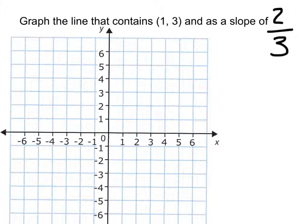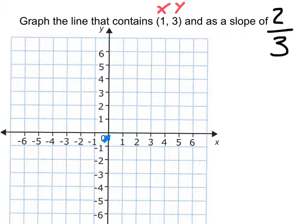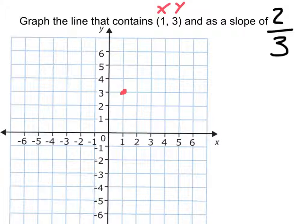I can see that it says graph the line that contains (1, 3) — this is our ordered pair — and a slope of 2 over 3, or the rise over the run. I like to label the rise and the run. We're going to start at the origin point, go 1 to the right because it's a positive 1, and then go up 3. This is going to be our starting point.